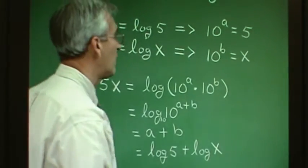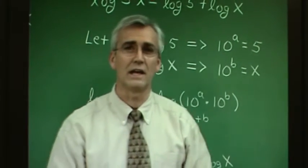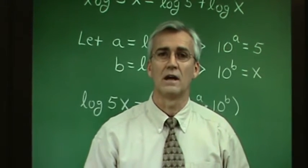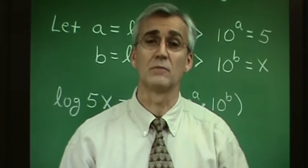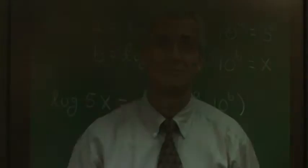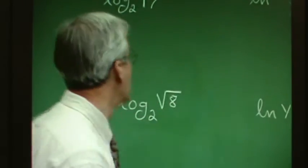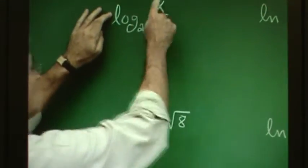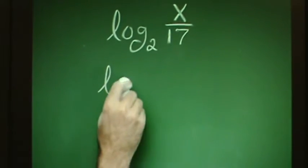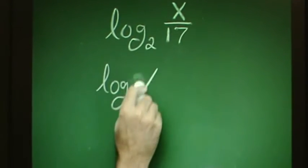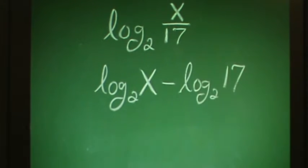This may look like smoke and mirrors right now, and that confusion is expected. But with a little experience it will all become clear. Let's use the properties of logarithms to expand a few expressions. If we see the log of a quotient, we know it's the log of the numerator minus the log of the denominator. So it's simply log base 2 of the numerator minus log base 2 of the denominator.